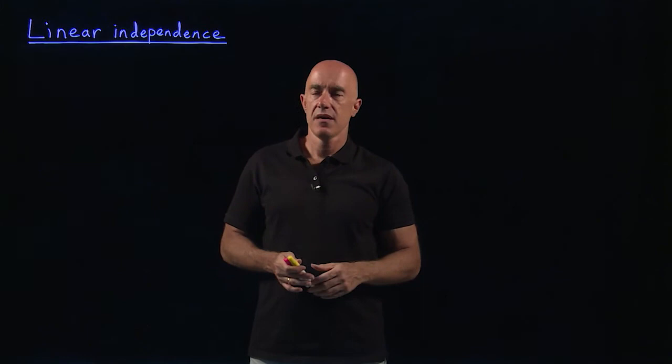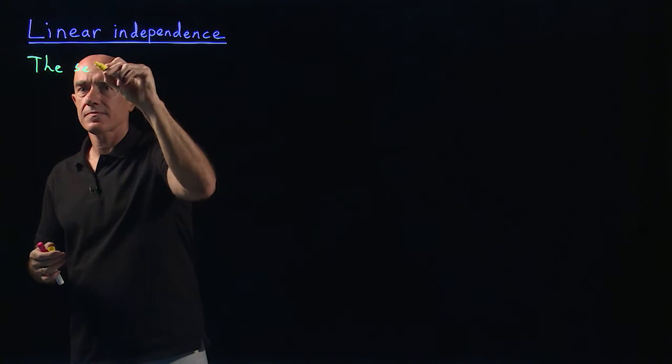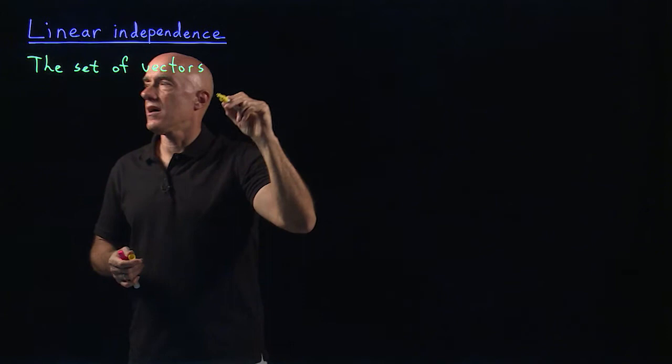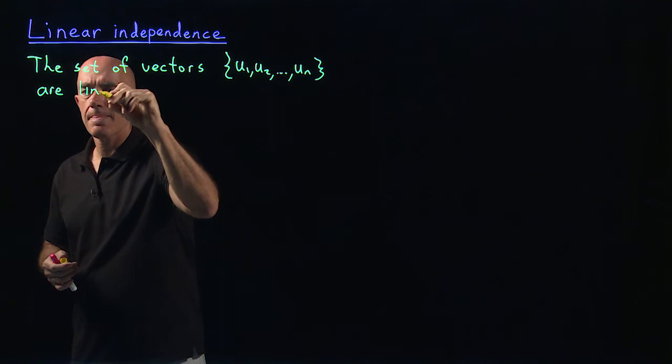This is an important concept that we'll use later in the course. So, the set of vectors U1, U2 through UN, so N vectors are linearly independent